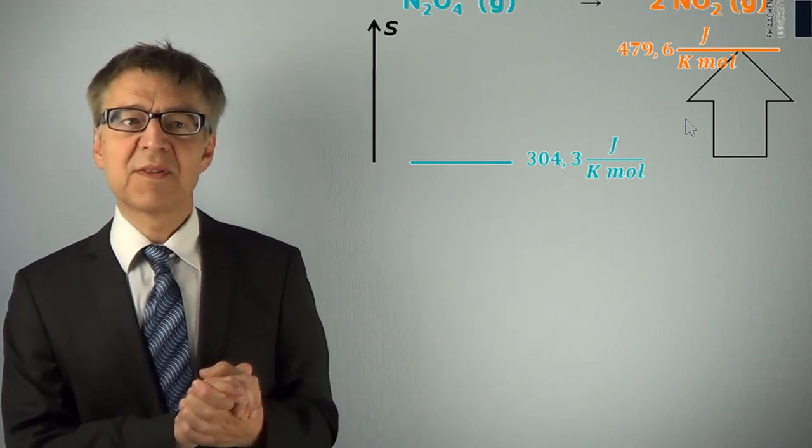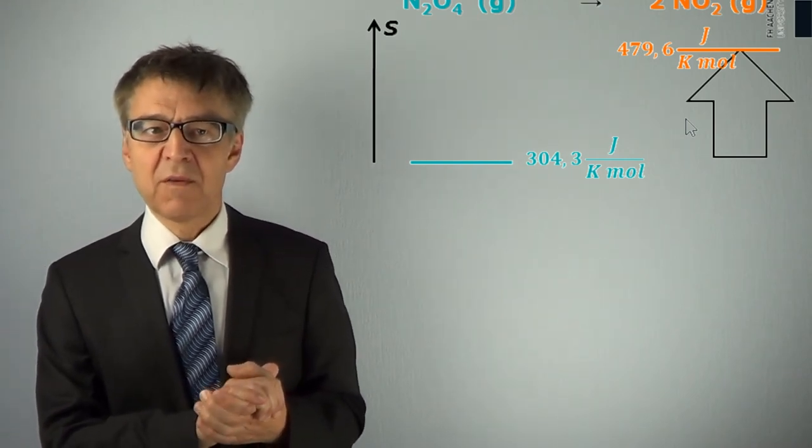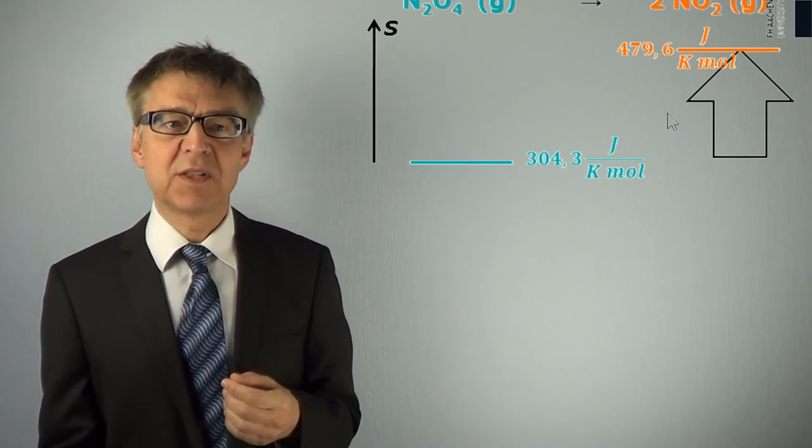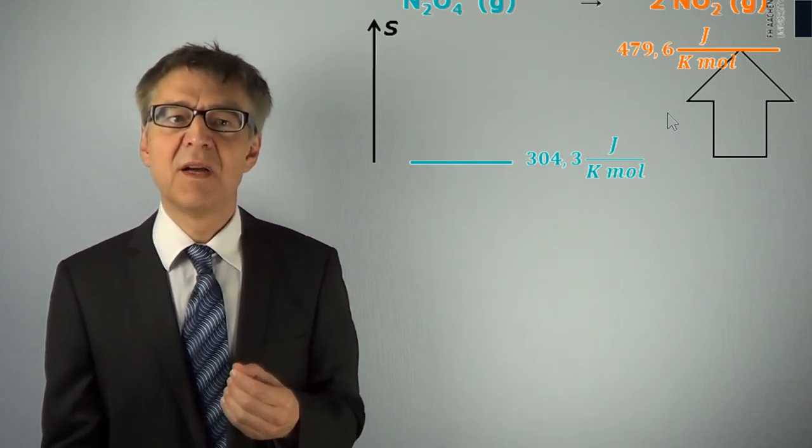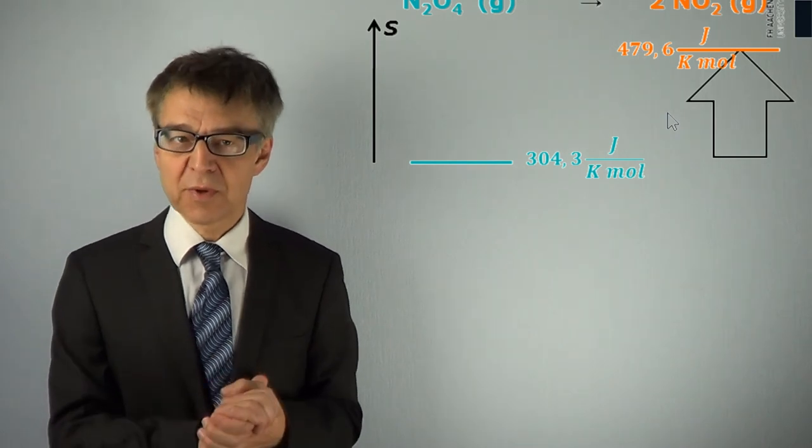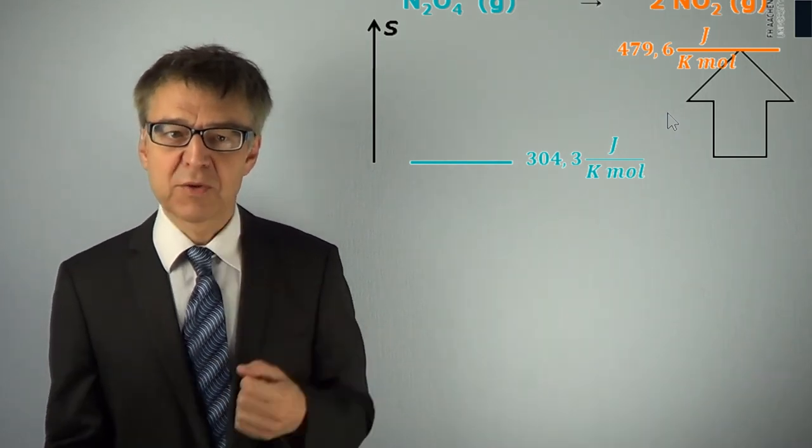The entropy increases in this dissociation too. For the complete reaction, it would increase from 304.3 to 479.6 joules per kelvin, an endotropic process.